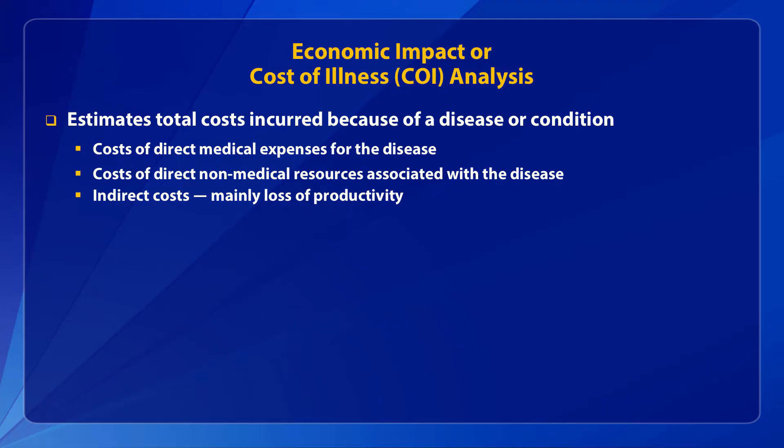This method calculates a person's production potential based on average wages, with some adjustments for household productivity. Although the human capital approach is fairly standard in cost-of-illness analysis in the United States, other countries may rely on different methods, such as the friction-cost method, which calculates productivity based on what an employer would have to pay to replace you as an employee.